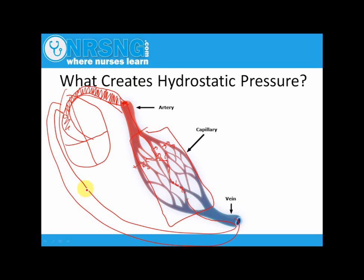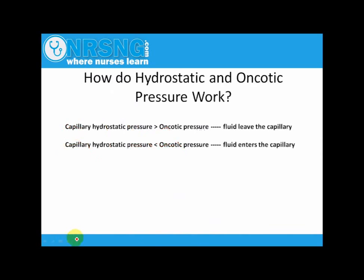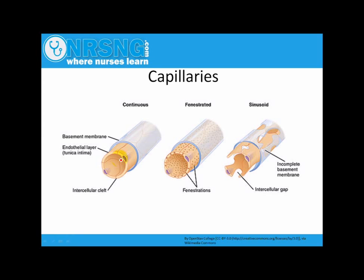So how do hydrostatic and oncotic pressure actually work within the body? If our capillary hydrostatic pressure is greater than our oncotic pressure, we're going to have excess fluid leaving the capillary system. Where capillary hydrostatic pressure is less than our oncotic pressure, we're going to have fluid enter the capillary system. Capillaries are very thin-walled vessels — only about one cell thick and highly permeable — and that's what allows osmotic pressure and hydrostatic pressure to actually work.